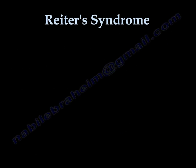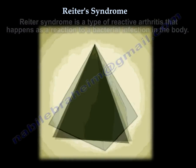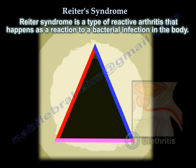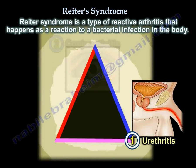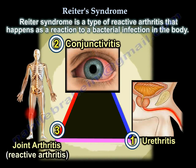Reiter's syndrome is a type of reactive arthritis that happens as a reaction to a bacterial infection in the body.